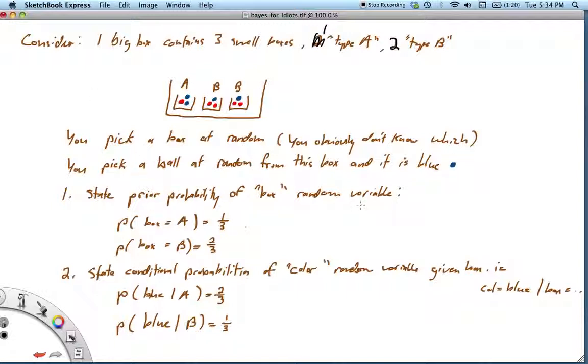You pick a box at random, you pick a ball at random from that box, and you look at it, and it's blue. The first thing I want to do is state the prior probability of the box random variable. The probability of picking a Type A box, there's two outcomes for the box random variable. The probability of getting a Type A box is a third, and the probability of a Type B box is two thirds.